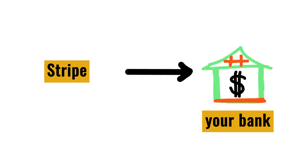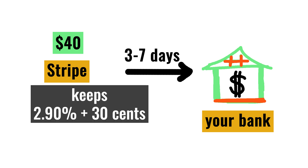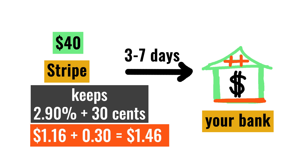The customer selected the Stripe payment option using his credit card to pay $40. The $40 will be sent to your Stripe account. In about three to seven days, you will receive the money, but it's not going to be $40. Stripe takes about 2.9% plus 30 cents per successful domestic card charge. So, 2.9% of $40 is $1.16, and $1.16 plus 30 cents is $1.46. Stripe will keep $1.46 and will send you $38.54.